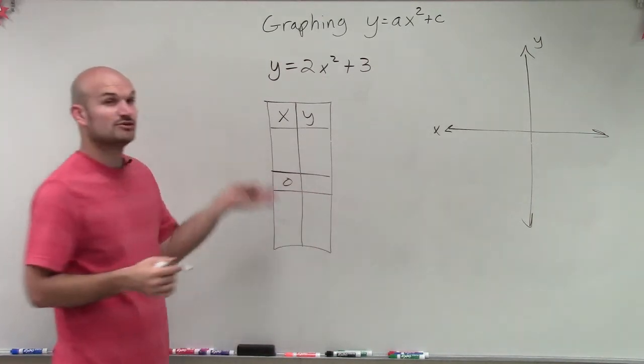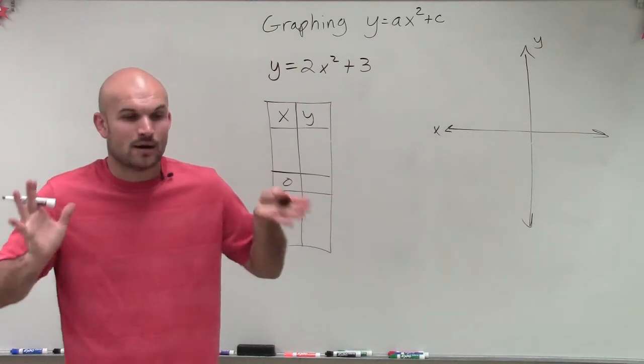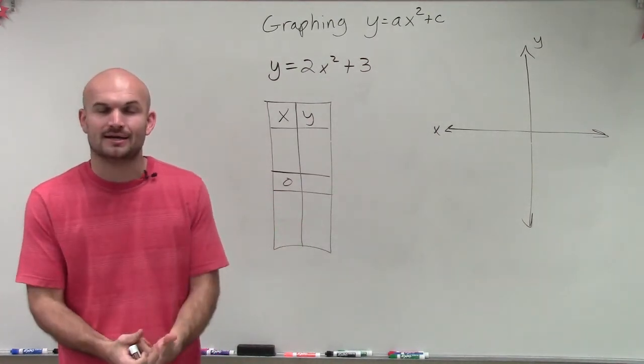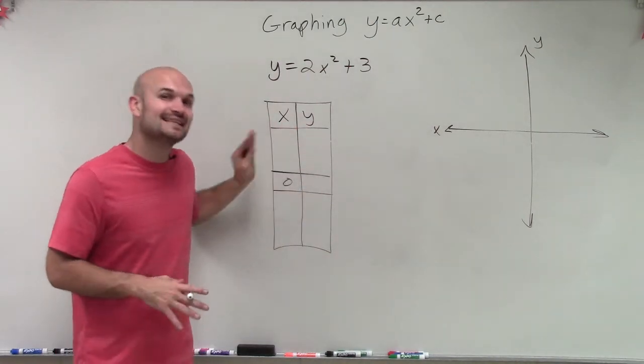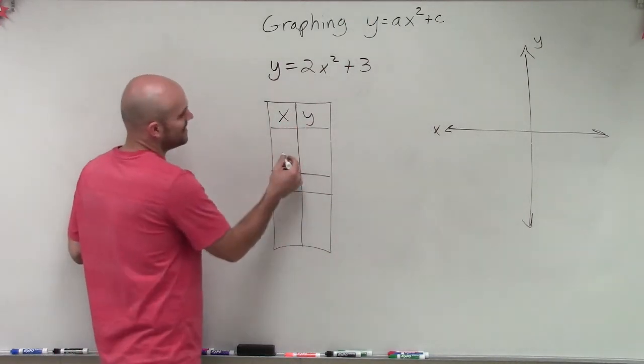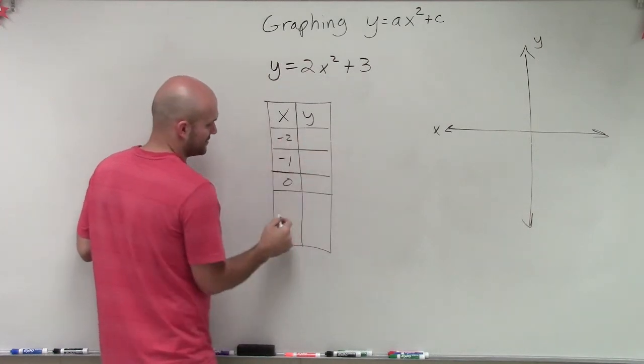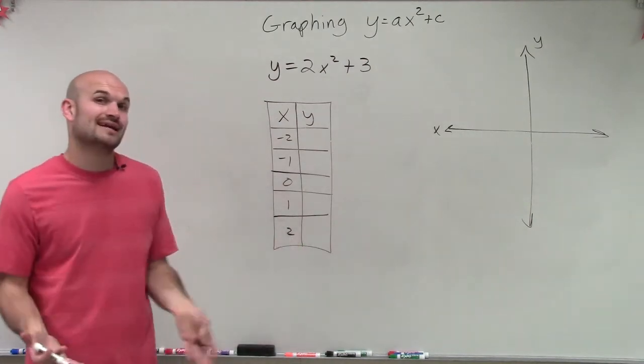So we'll start with the first coordinate is going to be x. And then what we need to do is choose two points to the left and two points to the right. Once you have your axis of symmetry, it does not matter what points you want to pick. You just need to make sure you pick at least two points to the left and at least two points to the right. So to make this simple, I'm just going to pick my points, negative 1 and negative 2, positive 1 and positive 2.